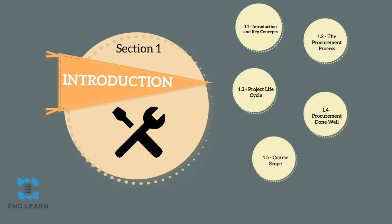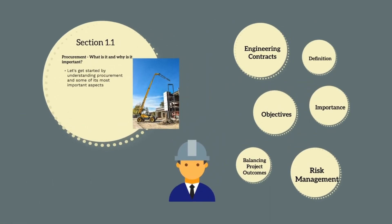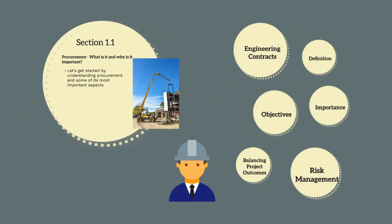Welcome to the first section of our procurement course. We'll start by trying to answer the question: what is procurement and why is it important? Hopefully, by the end of this section, you should have a clear understanding of what procurement is and why it's fundamental to construction management. In this section, we'll talk about engineering contracts, define procurement, talk about its objectives and importance, and how procurement supports risk management and balancing project outcomes.